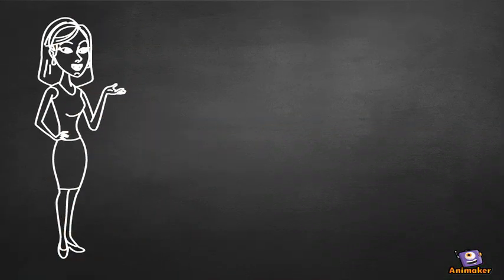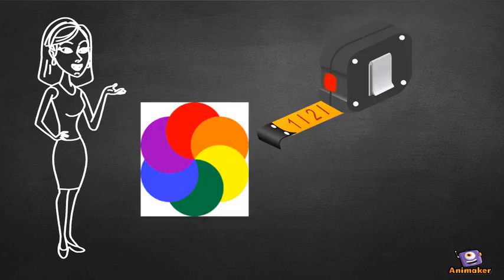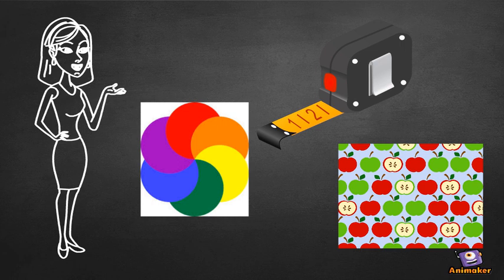Minor differences in appearance, such as colors, size, label, or pattern, are allowed provided such differences do not affect the value of the goods. Otherwise, the goods may not be considered as identical.